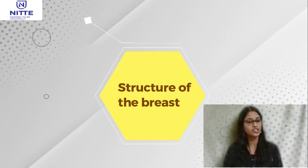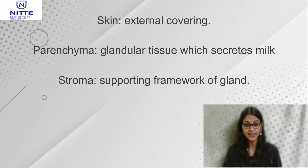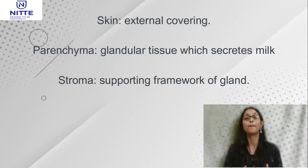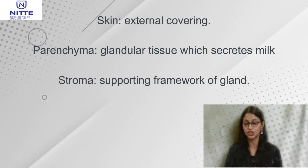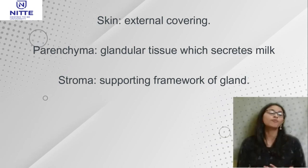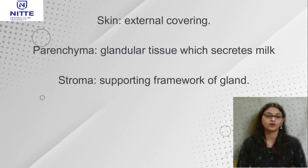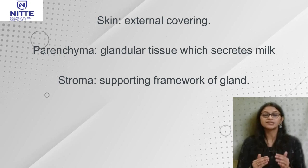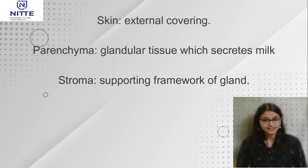The structure of the breast includes the skin that forms the external covering, the parenchyma that includes the glandular tissue which secretes the milk, and the stroma that forms the supporting framework of the gland. These are the three main structural components of the mammary gland.